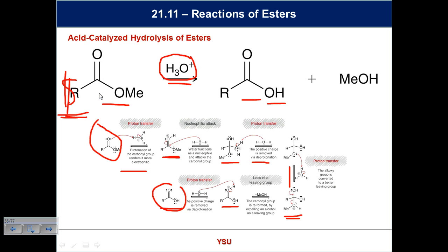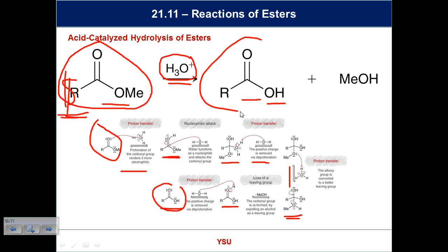There are all kinds of esters available from nature — particularly from fruits — that we can turn into carboxylic acids. Conversely, many carboxylic acids in nature can be turned into esters. It's necessary to have conditions to go in both directions, and biochemistry uses these simple reactions to go back and forth depending on what's needed.